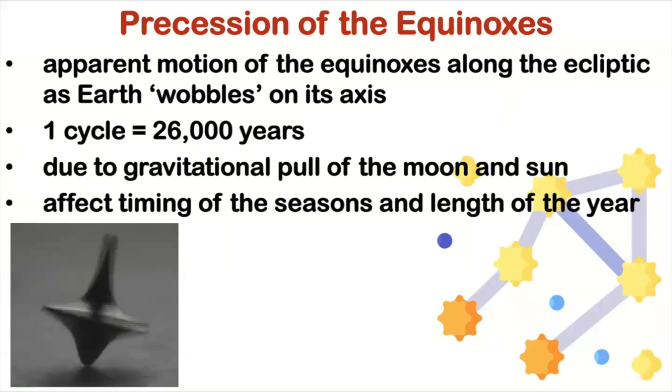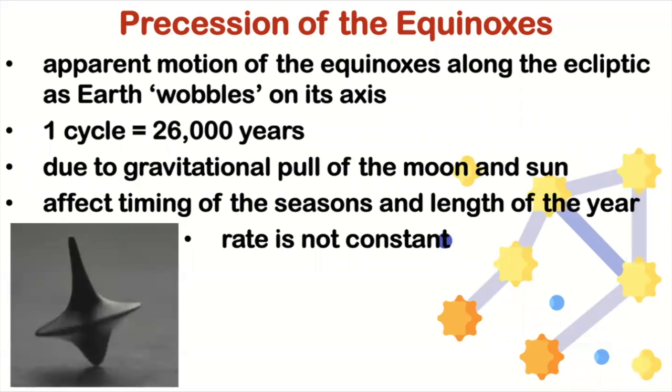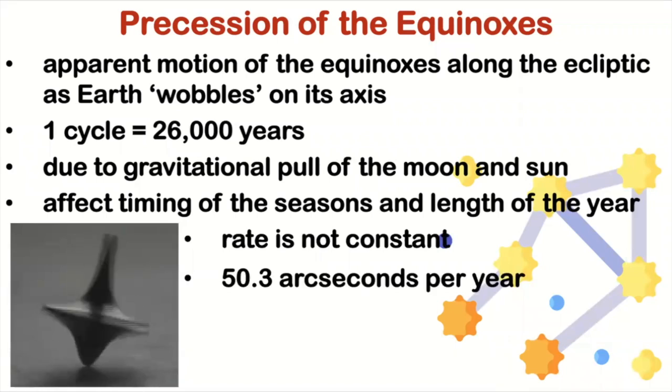You also have to remember that the rate of precession is not constant. It varies slightly depending on factors such as the gravitational pull of the planets and the shape of the Earth's core. Currently, the rate of precession is about 50.3 arc seconds per year, which means that it takes about 72 years for the equinoxes to shift by one degree along the ecliptic.